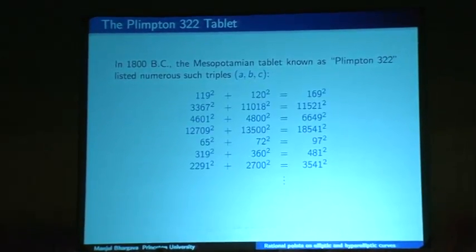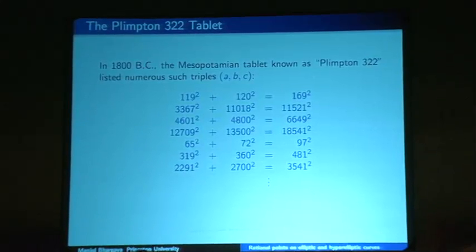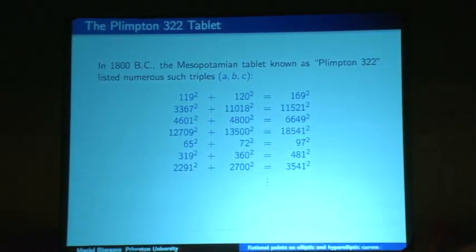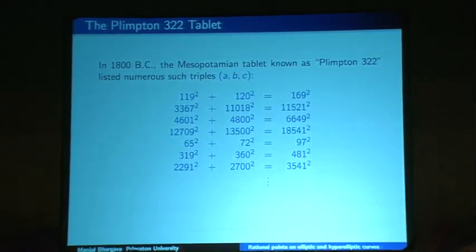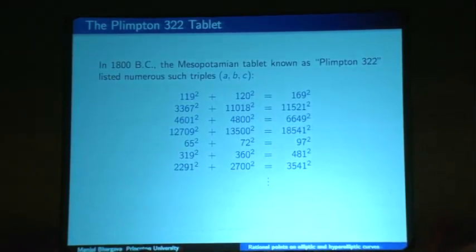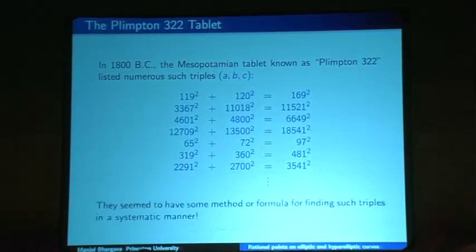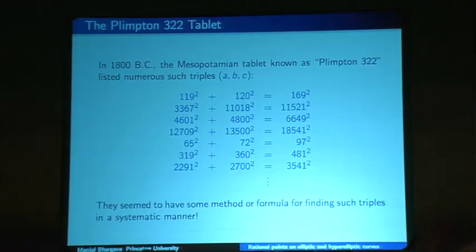Here are some examples written on a clay tablet in 1800 BC. As you can see, some of these solutions to A² + B² = C² are quite large — the middle one has five digits for each of A, B, and C. So it seems they didn't just find these experimentally; they must have had some method or formula for finding these triples in a systematic manner. It would be hard to come up with these just ad hoc, back in 1800 BC.